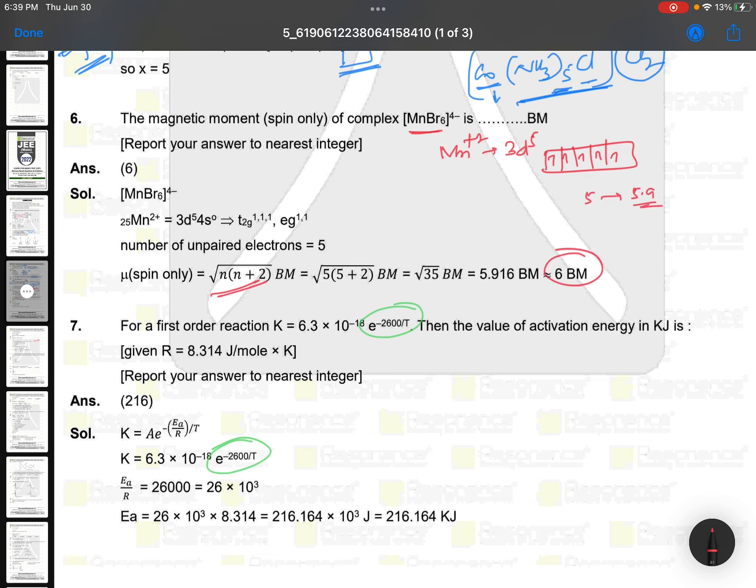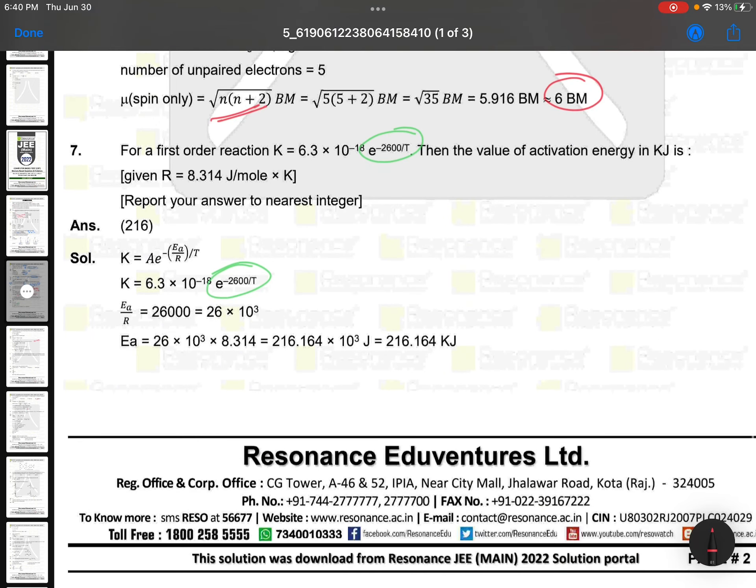For the first order reaction at 2600K, K = 6.3 × 10⁻¹⁸ e⁻²⁶⁰⁰/T, then the value of activation energy in kilojoules. The formula is K = A e⁻Ea/RT. This is a routine formula from chemical kinetics. These kind of questions are nowadays repeatedly asked. This value is 26000. You just see the formula.